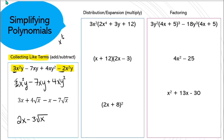Revisiting distribution: if you have a single term in front of brackets, you must multiply it with everything within. Here 3 times 2 = 6, and for x times x⁴, use exponent laws to add: 1 plus 4 = 5... wait, 2 plus 4 = 6, so x⁶. Moving to 3y: 3 times 3 = 9, and since the exponents are different you just write them down. And 3 times 12 = 36, with the remaining x² written down as is.